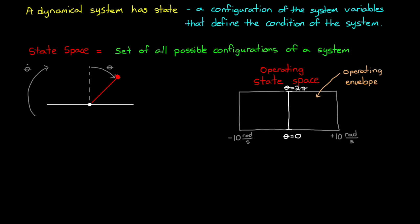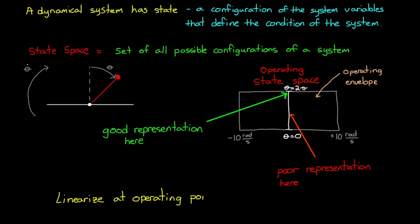It would be ideal if we could just get a linear model that worked well over the entire state space. But that usually isn't the case, because a single linear model might represent the dynamics well at some states, but due to the nonlinearity of the system, it would be a poor representation at others. So, to work around this, we linearize at specific locations, called operating points where we want the lowest error.